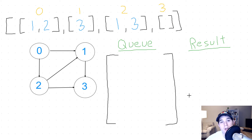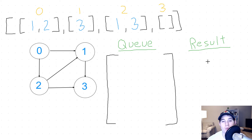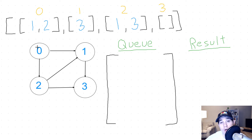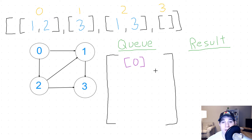Let's go over the BFS approach. We're going to be utilizing a queue, and we're also going to be returning a list of lists from our function — this list of lists is going to be all of the paths we have found after the BFS. Inside the queue we're going to be storing a list of numbers which will represent the path seen thus far. To start our BFS off, we always begin at node 0, so we add a list containing just node 0.